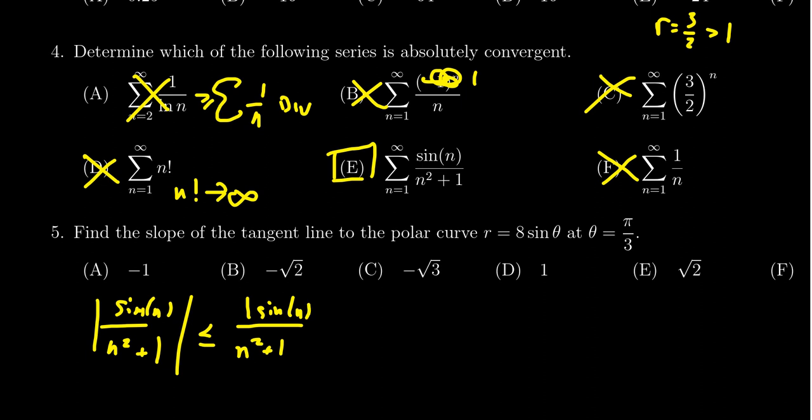Sine is negative sometimes, positive other times. But regardless, the absolute value of sine is going to be bounded below by zero, but bounded above by one. So our sequence, the absolute sequence I should say, is bounded above by one over n squared plus one.